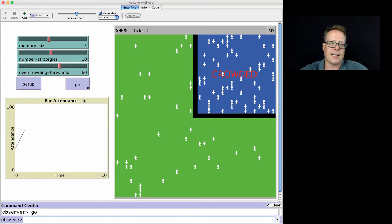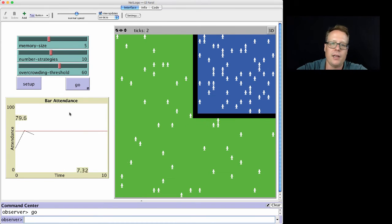As you can see, it says that the bar is crowded. This red line on the plot is showing the bar attendance at 60. You can see that it's barely above that. If I go again, the next time it's not crowded. And in fact, the line's below 60.